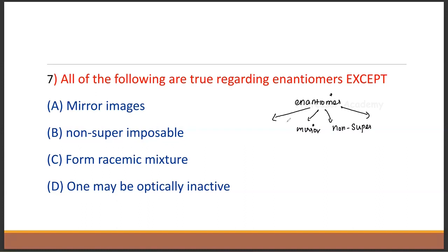What is the meaning of racemic mixture? It is a 50-50 mixture of D and L forms — 50% each. It is an enantiomer pair forming a racemic mixture.